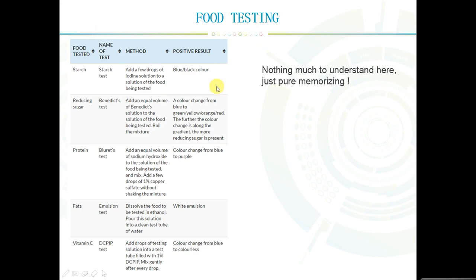Now, food testing. You need to be able to test for certain types of food. First of all, starch. If you want to test whether a certain solution has starch in it, all you have to do is add a few drops of iodine to the solution. If the solution turns blue or black, that means you have starch. You've positively found that there is starch in the solution.